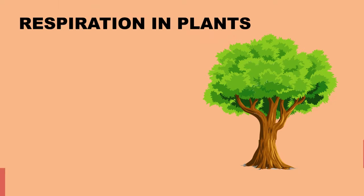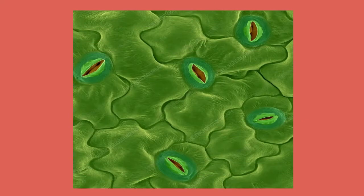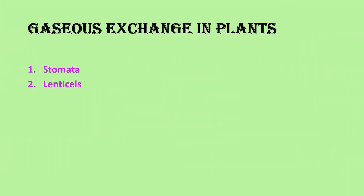As we know, stomata are gaseous exchange places in plants. Along with stomata, there are some other areas which help in gaseous exchange. The parts which help in gaseous exchange are: stomata, lenticels, and aerial roots or respiratory roots.